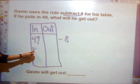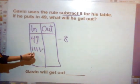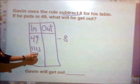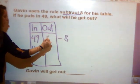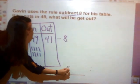49, 48, 47, 46, 45, 44, 43, 42, 41. Gavin's number must be 41.